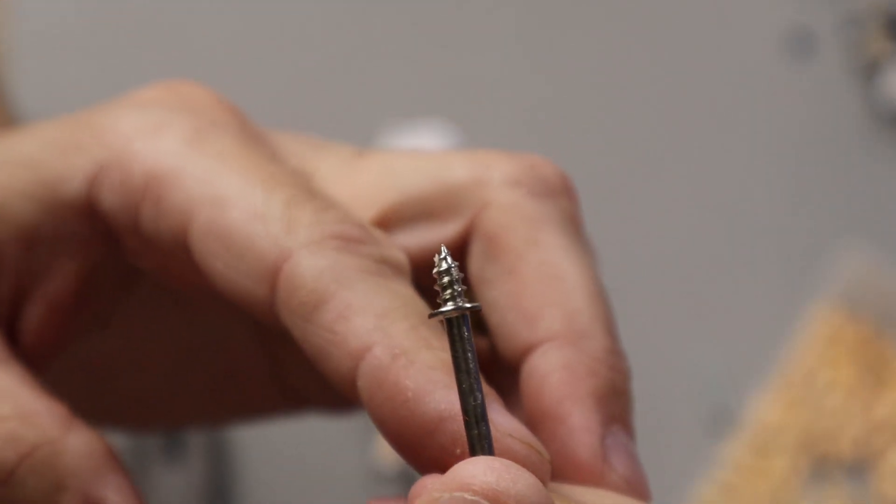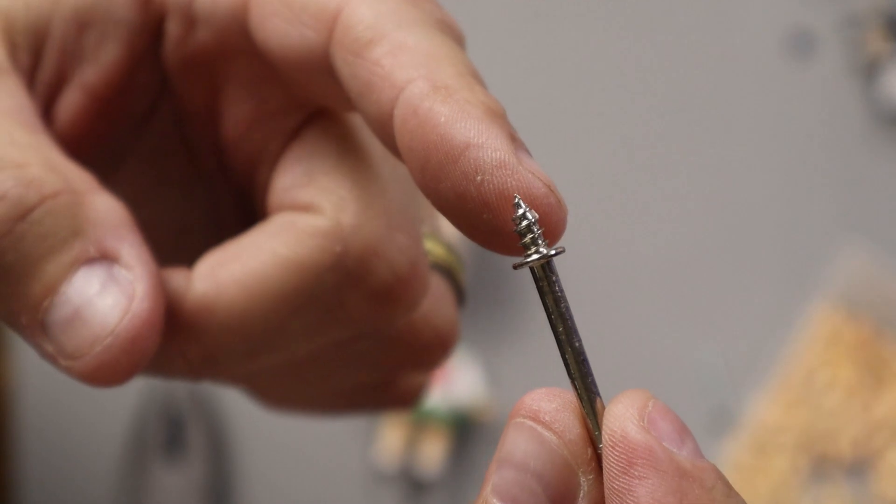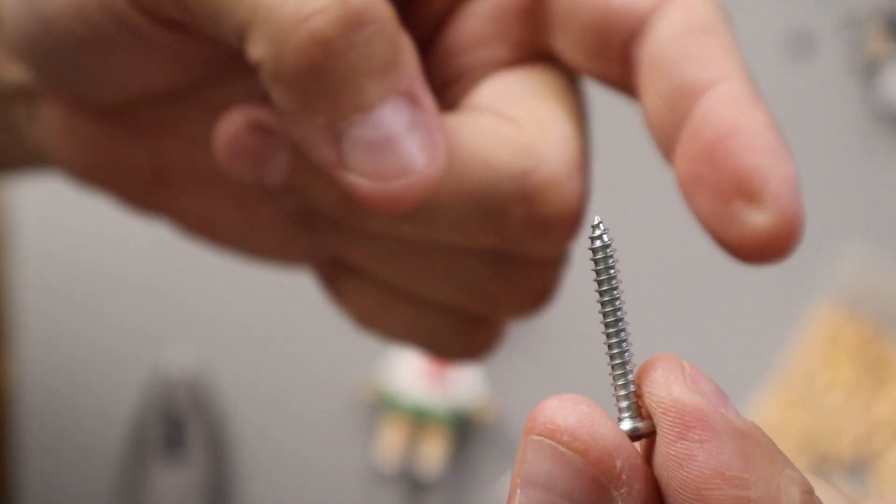The tool I use for this part is a small threaded bit that came in my rotary tool kit. It's designed for something else entirely, but it works great for this. In a pinch though, a small screw from your junk drawer will work just as well.